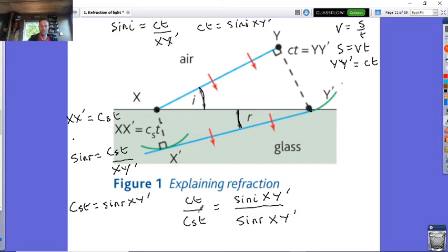We're all very excited and we can see what's happening. The t's are going to cancel and the XY's cancel, and suddenly c over cs is now equal to sin i over sin r. I know sin i divided by sin r is the refractive index.